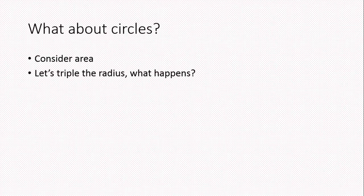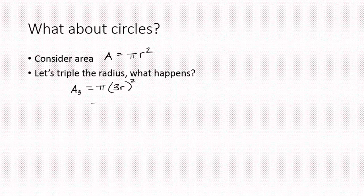Now let's consider circles. The area formula is πr². Let's triple the radius and see what happens. The new area A₃ = π(3r)² = π × 9 × r² = 9πr². The original area was πr², so after tripling the radius, the area has been multiplied by nine — which is 3².